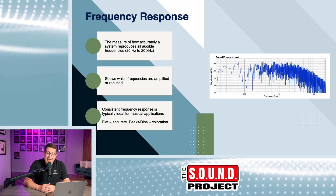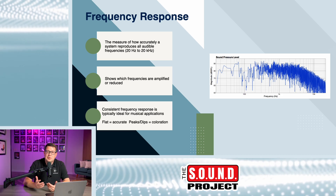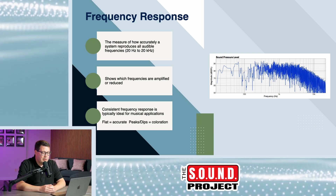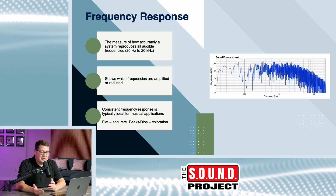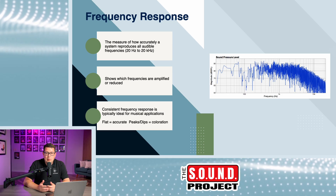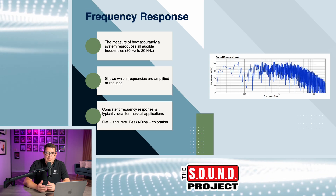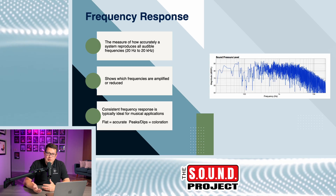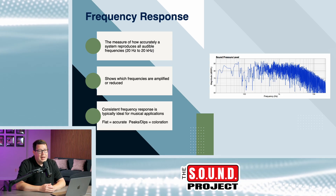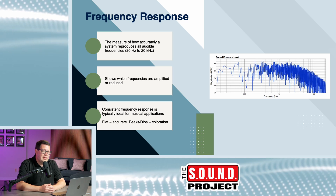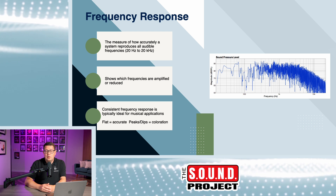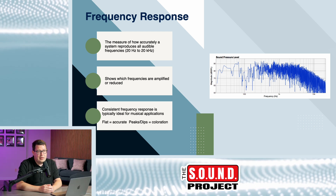There are issues that come with an untreated room — you have cancellation and buildup in the lower frequency range, and comb filtering in the higher frequency range. The graph shows which frequencies are amplified or reduced. On this graph, amplitude is on the y-axis in decibels and SPL level, and on the x-axis you have frequency, going from low frequencies up to higher frequencies on the right. A consistent, flat frequency response is considered accurate, but peaks and dips cause coloration in what we're hearing. Without acoustical treatment, your frequency response is erratic and you're making decisions based on how the room sounds rather than how the recorded material presents itself.